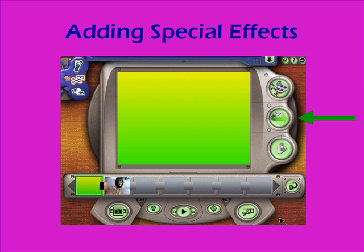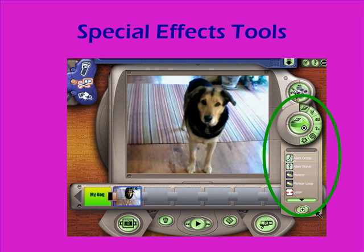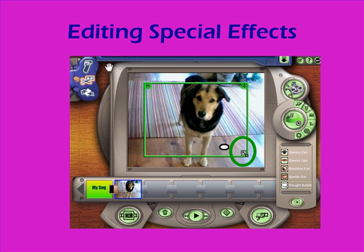Now I'm going to click on the special effects button — that's the second button on the right — to open up my special effects tools. I'm going to drag and drop the thought bubble special effect onto my screen. Notice the green box means that I can edit that special effect. I'm going to use the bottom right corner of the box to resize that thought bubble so it doesn't cover up my dog's head.